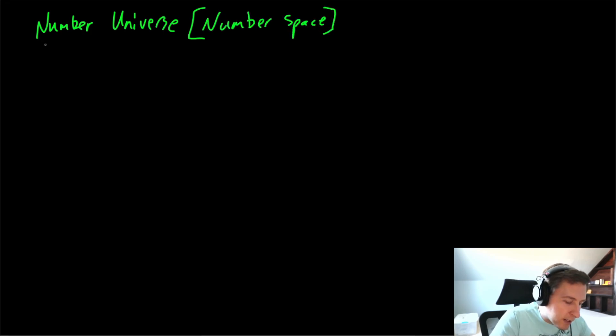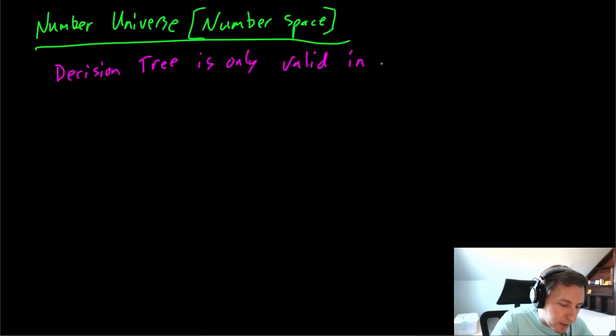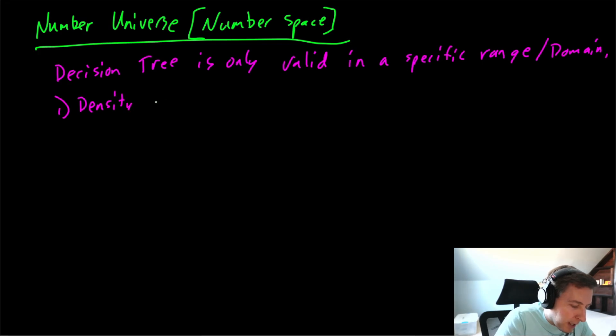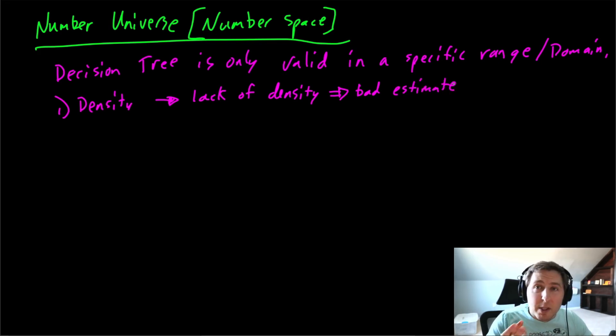To start off, what I'm trying to show you is the number universe, or more specifically, the number space. I'm just trying to say a decision tree is only valid in a specific range or domain. I don't know the technical terms for this, but we're going to talk about density. In simple terms, a lack of data density results in bad estimates.